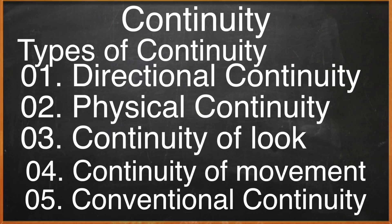पाँचवाँ है conventional continuity। Audience को geographic region की अच्छी समझ होती है। मान लीजिए एक किरदार मुंबई से कलकत्ता flight लेता है — map में मुंबई west में है और कलकत्ता east में। तो flight take-off करते वक्त screen का direction left से right होना चाहिए। Landing के समय भी direction left से right रखना होगा ताकि audience को पता चले।